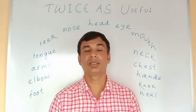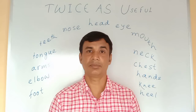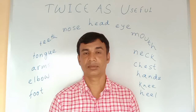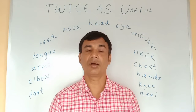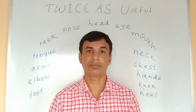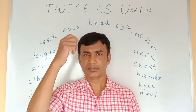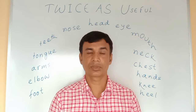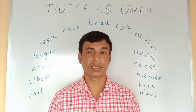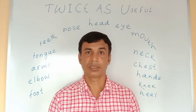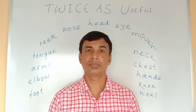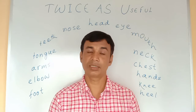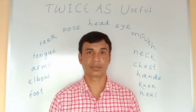Then we will go to our next body part — that is teeth. Teeth of a comb. We use a comb to comb our hair. So the use of teeth is here. The teeth of the comb are broken. This is very simple English.